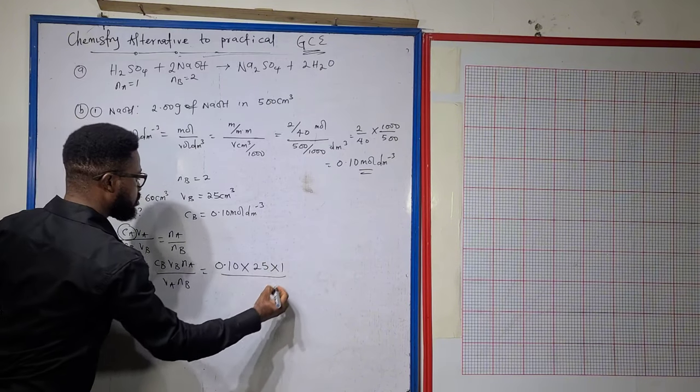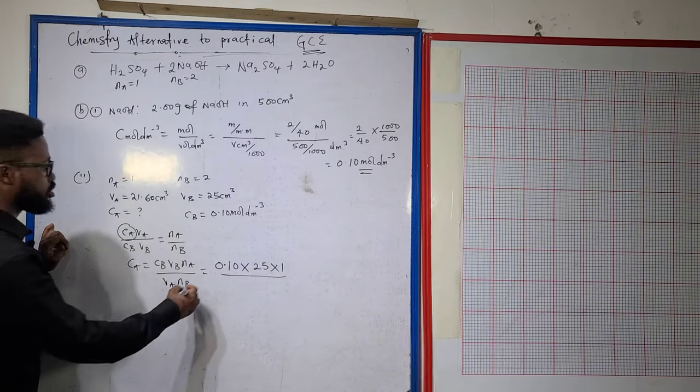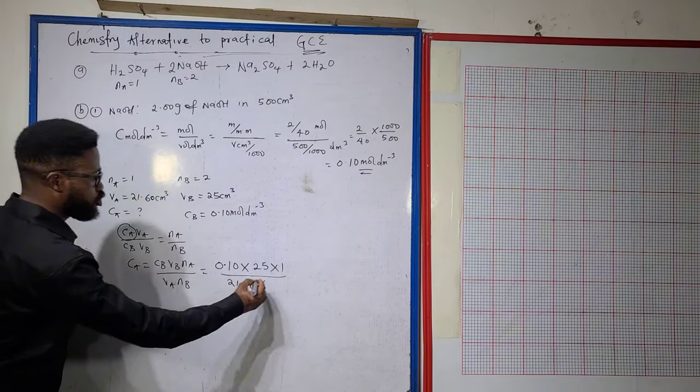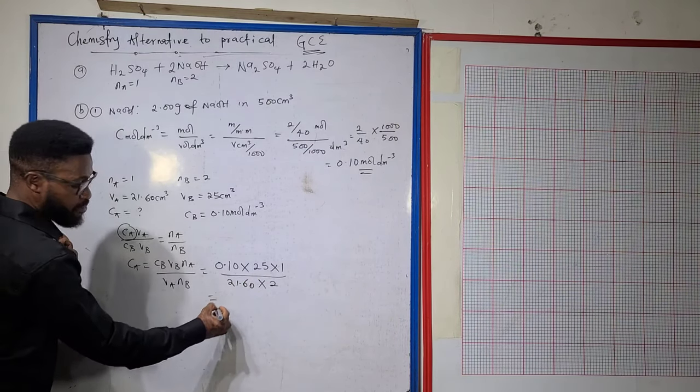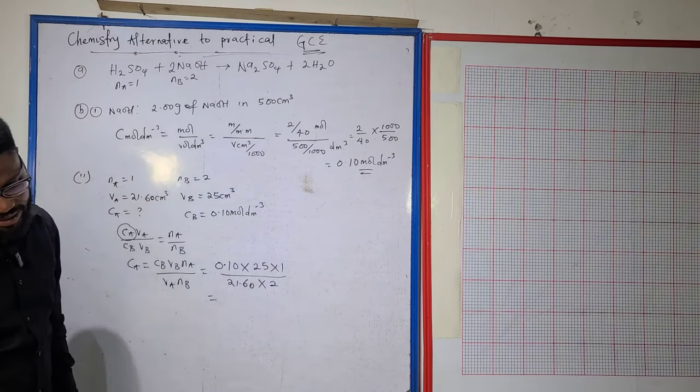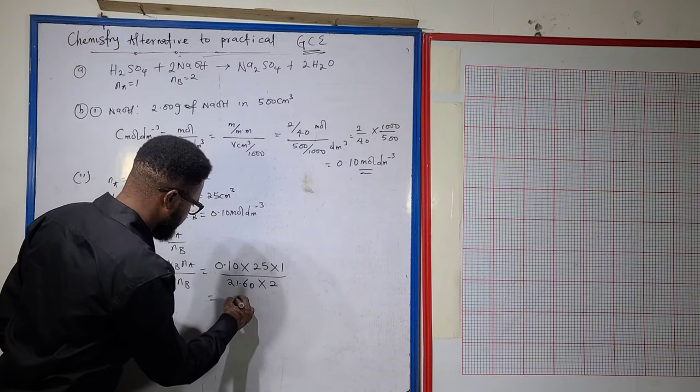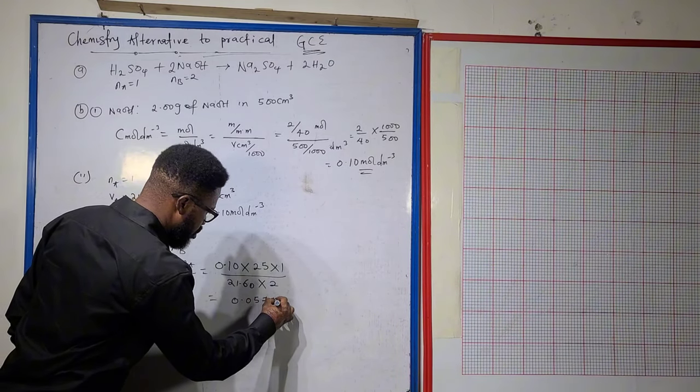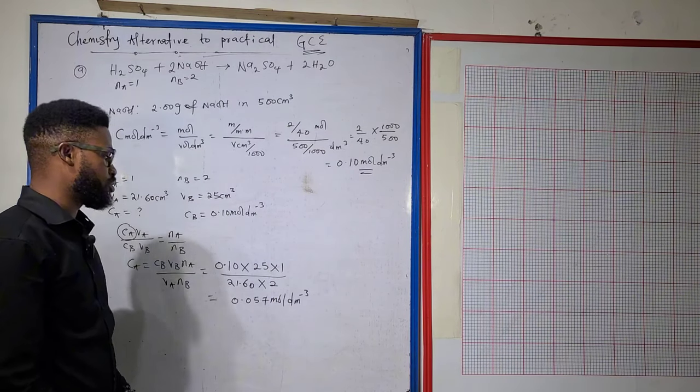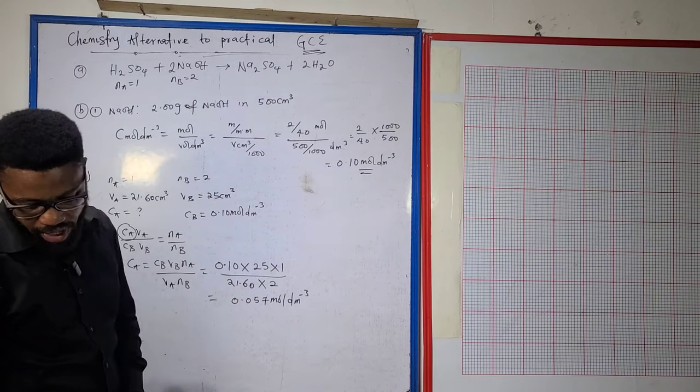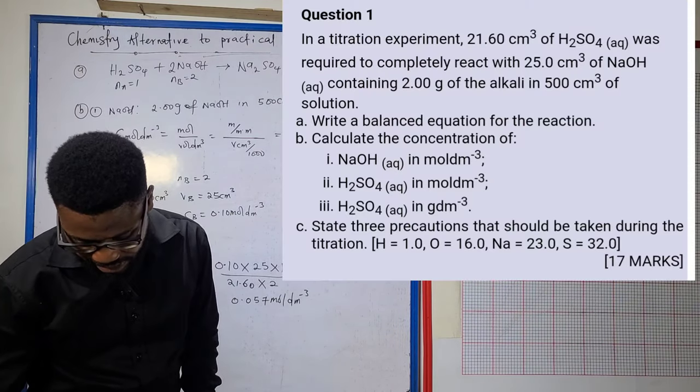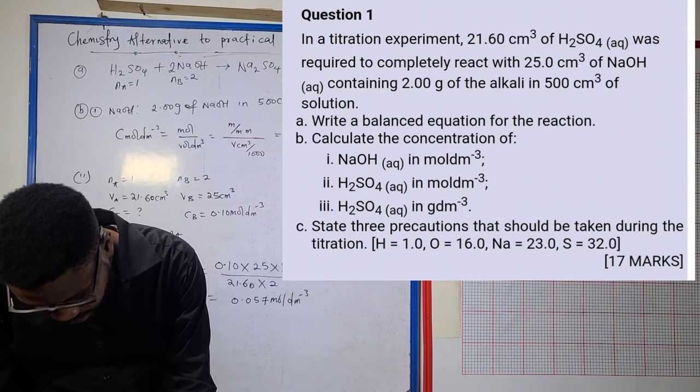That means 0.10 times 25 times 1, all divided by 21.60 times 2. If I compute this, the concentration of my acid in moles per dm³ is 0.057 moles per dm³. That ends b2.